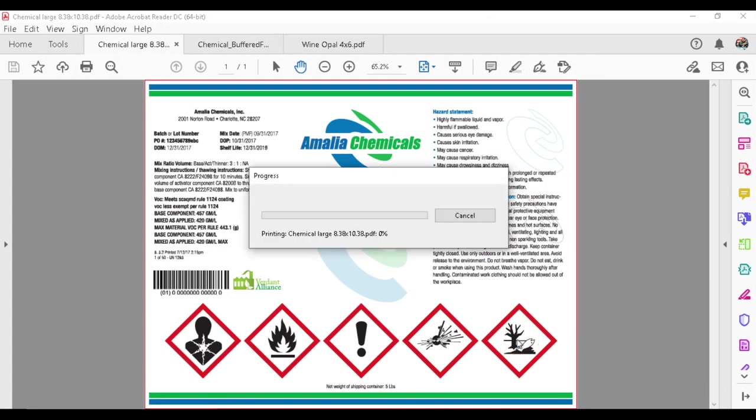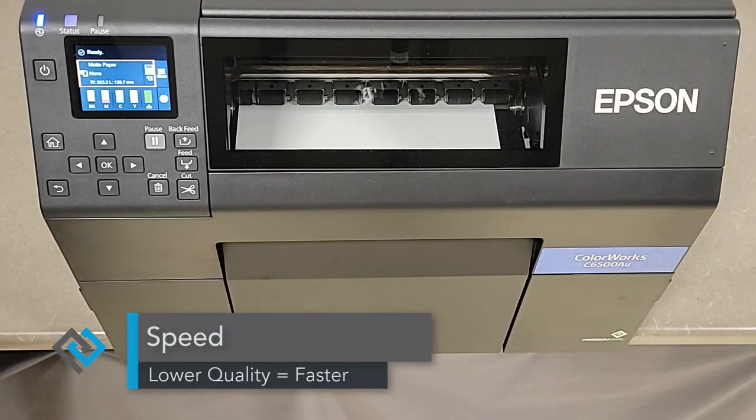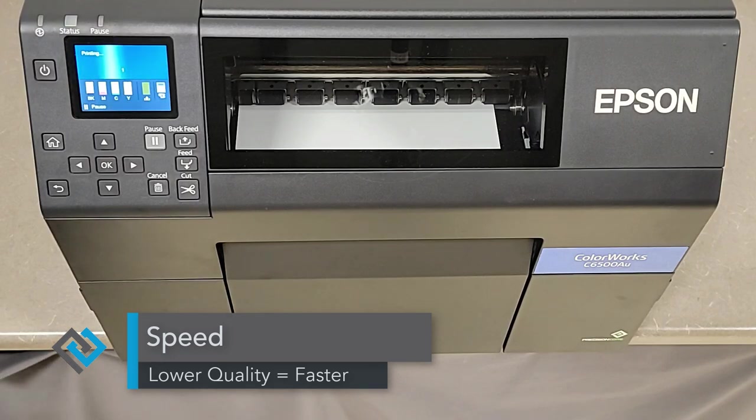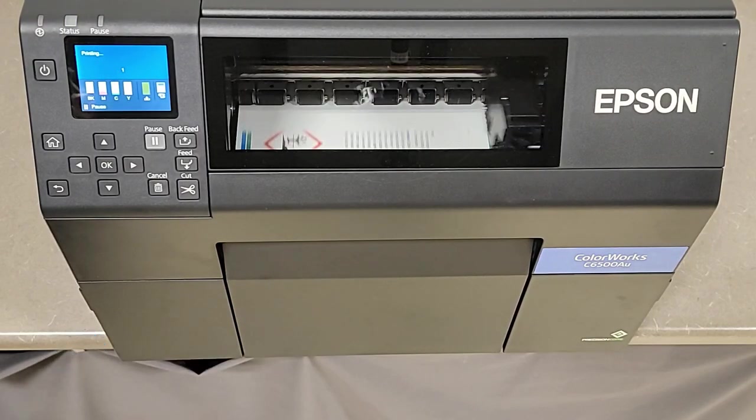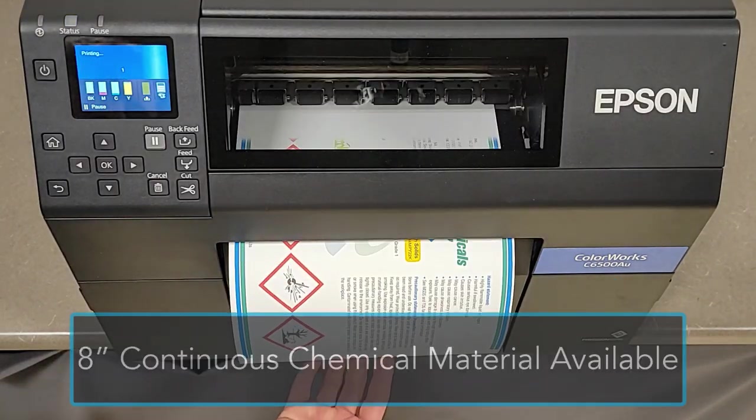With a chemical label, you know, the detail is not that important. And speed matters a little bit more. So as you'll notice, this one will probably print faster than the last one. Because the detail doesn't need to be there. You could adjust the settings with this Epson printer.